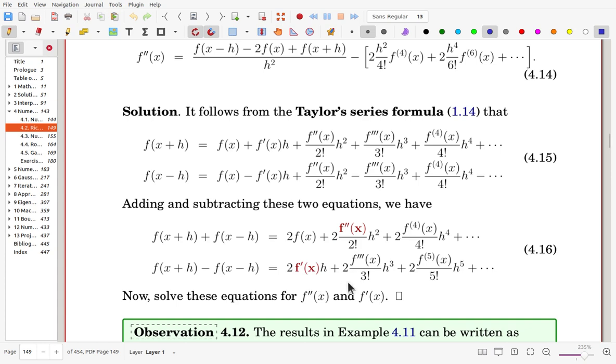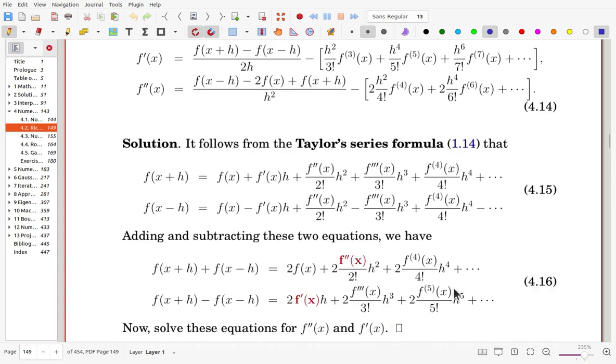Now we can solve these equations for f double prime at x and f prime at x. So if we do that way, then you can reach at the formula. For example, for this one, now you move everything else to the other side, and then divide by h squared. That will make this second formula. And from this one, you move everything to the other side, and divide by 2h, then you will get the first formula.